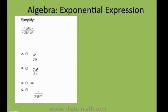Here we need to simplify this exponential expression. The first step is to make sure that all your exponents are in the same place. I have a to the 4th, b to the negative 7. On the bottom I have b to the 7 and a to the 5th.